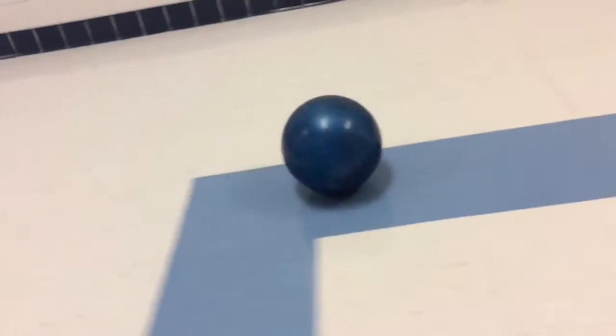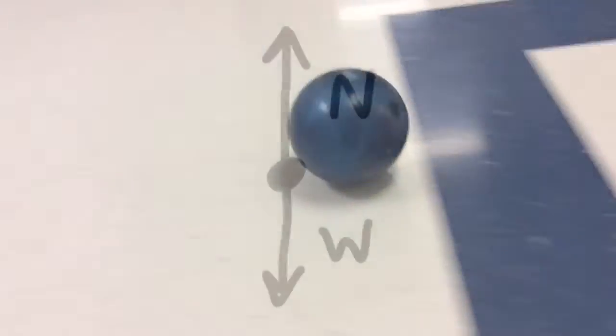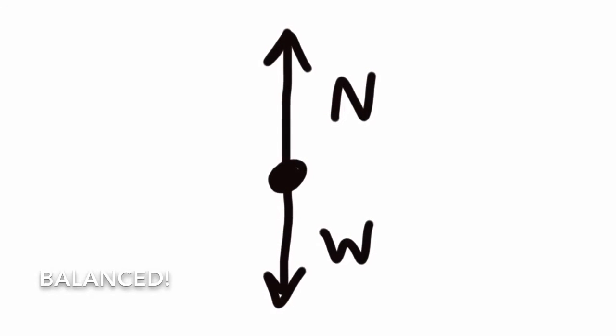Now, a bowling ball rolling down the hall at a constant velocity. You have the same forces, a normal force and a weight. They are also balanced forces.